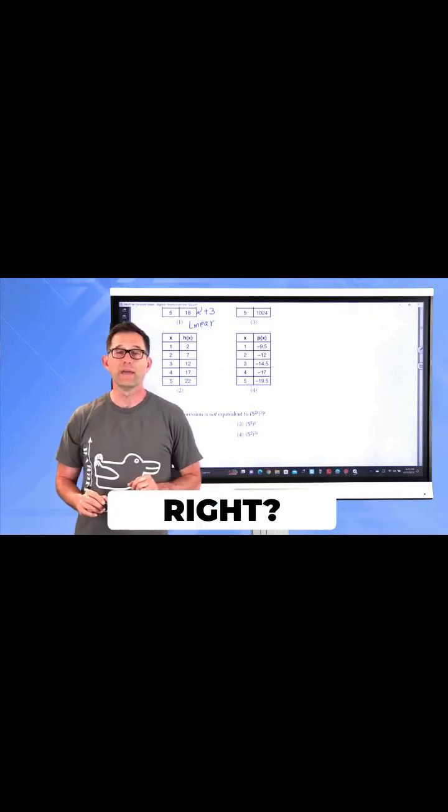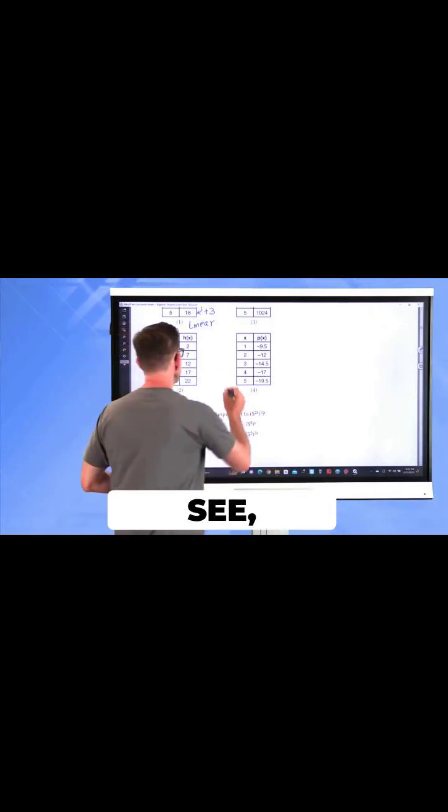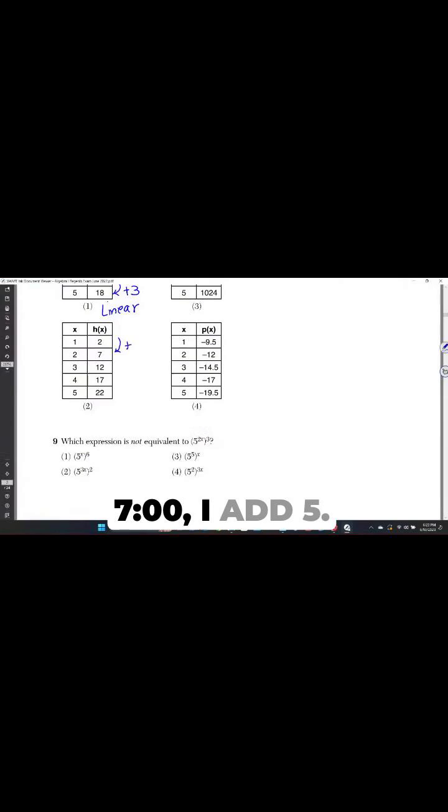Let's take a look at choice two. In this case, what I see, to go from two to seven I add five, to go from seven to twelve I add five, to go from twelve to seventeen I add five, and to go from seventeen to twenty-two I add five.